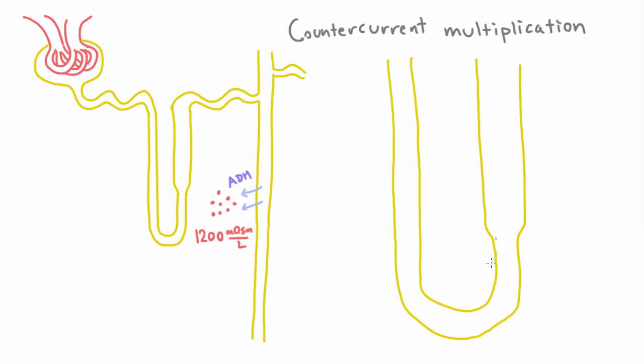So we established that using sodium transporters that it has, the loop of Henle can establish a difference of 200 milliosmoles per liter between the inside and the outside. And we know that those sodium transporters are in the thick ascending limb.